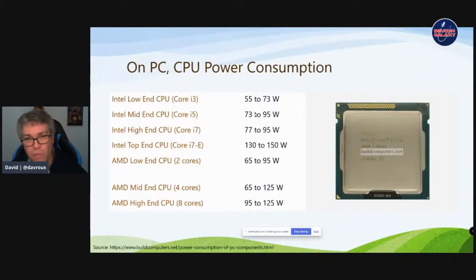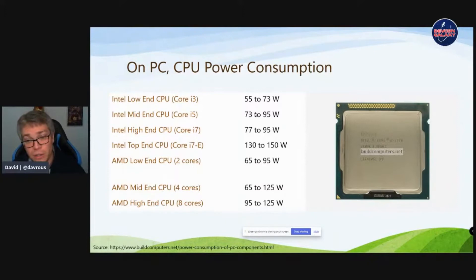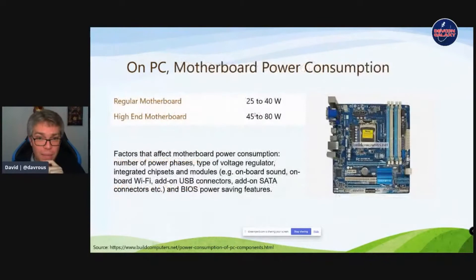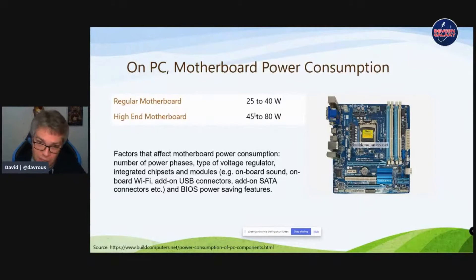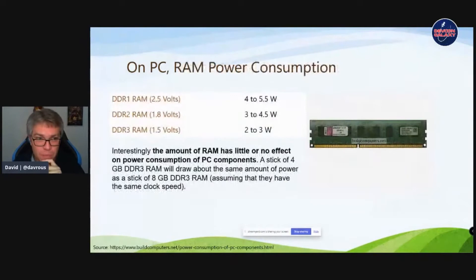Starting with desktop: it depends on the type of CPU — low-end or high-end varies a lot — but it goes from around 55 watts up to 150 watts. The CPU consumes a lot of energy on desktop. For the motherboard, which contains the network interface, Bluetooth, Wi-Fi, and sometimes the video card, it goes up to 40 watts for a regular board. This is where we might try to act at the network level.